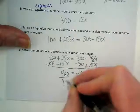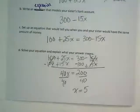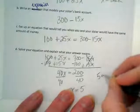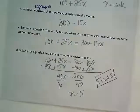Divide by 40. And I get x is equal to 5. So it will take 5 weeks before my sister and I have the same amount of money in our account. All right.